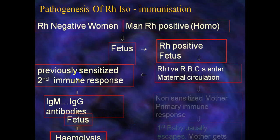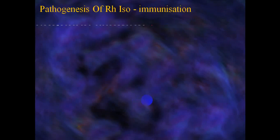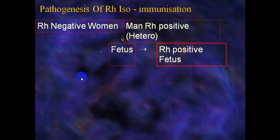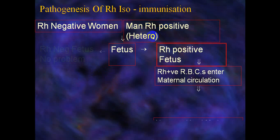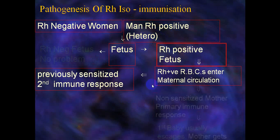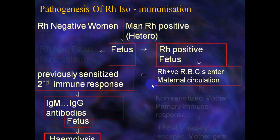Previous sensitization may have occurred if the mother aborted a first pregnancy at two, three, or four months without knowing her blood group was RH-negative and the baby was RH-positive, causing antibody formation. If the RH-negative woman's husband is RH-positive and heterozygous, the fetus could be either RH-positive or RH-negative. If negative, there is no problem. If positive, the same process of sensitization occurs.